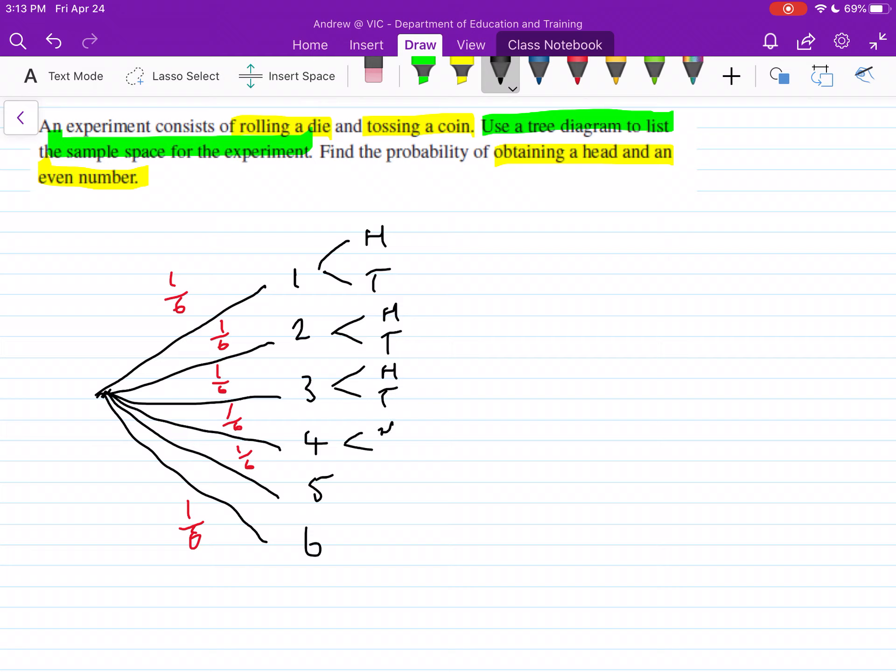So just fill it all out like so. So we've done our tree diagram. Now each one of these, we've got a half chance. So I'm just going to write half at the top and the bottom because I haven't left enough room. So each one of these has got a half for this branch here.